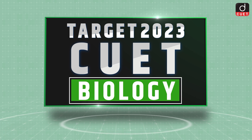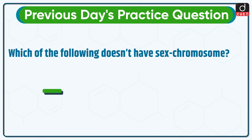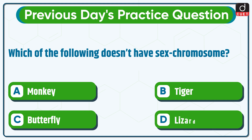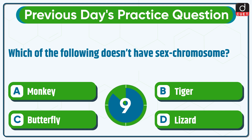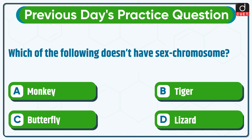Hello everyone, welcome to Target CUET Biology episode. Let's begin with previous day's practice question. The question was: which of the following doesn't have sex chromosomes? Monkey, Tiger, Butterfly, or Lizard? The correct answer is option D, Lizard.